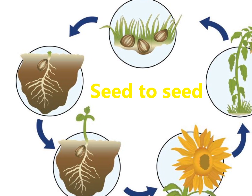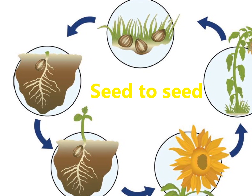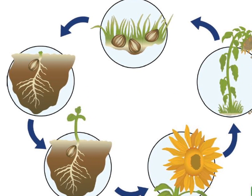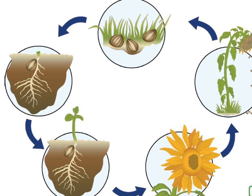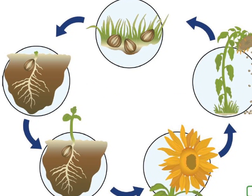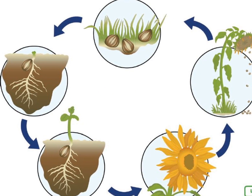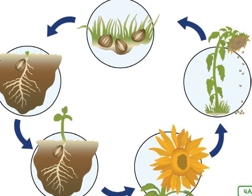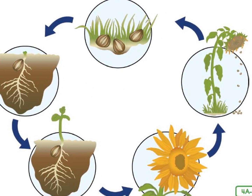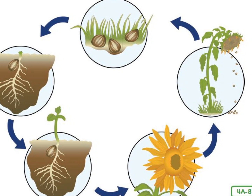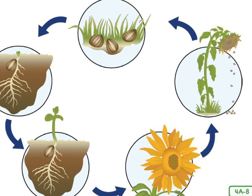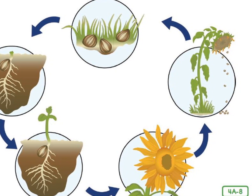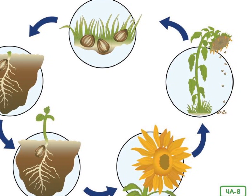All of this is happening around us in spring, summer, and early autumn. The potential for new life is being created as flowering plants are pollinated and seeds are dispersed. Across the world, the life cycle of flowering plants is renewed, or happens again, each year.